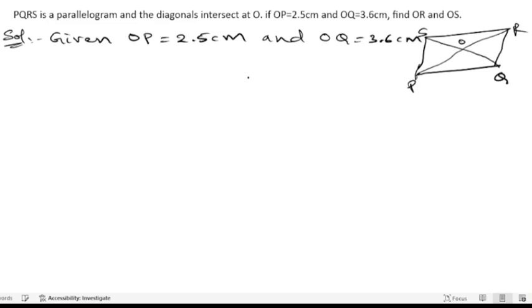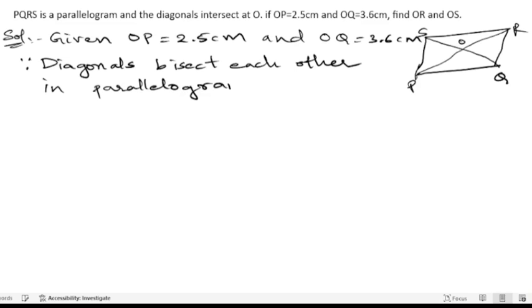We need to find OR and OS. In a parallelogram, we know that diagonals bisect each other. When the diagonals bisect each other in a parallelogram, we get equal halves. So OP equals OR and OS equals OQ.